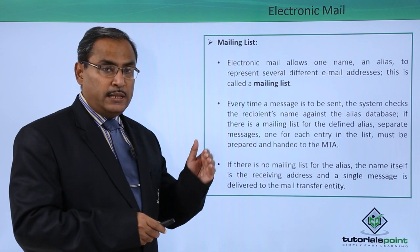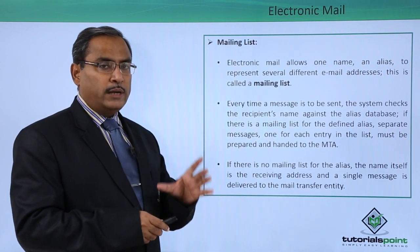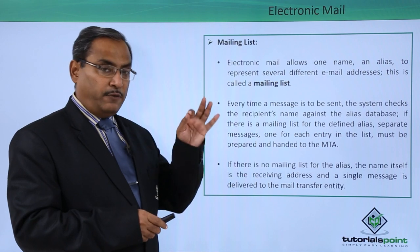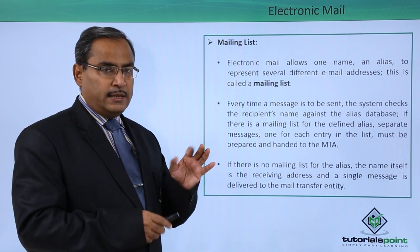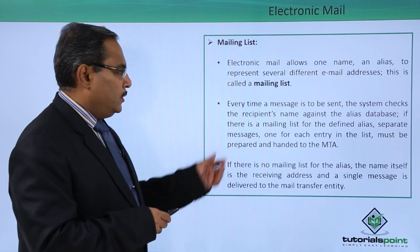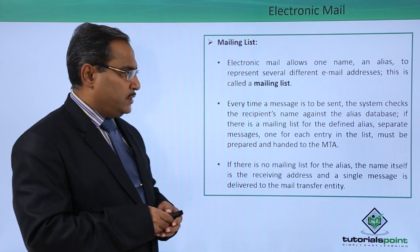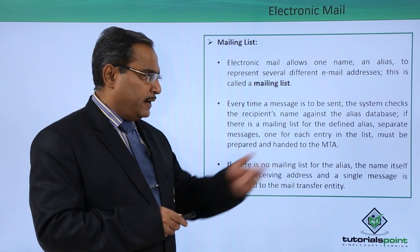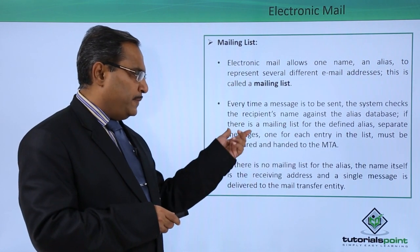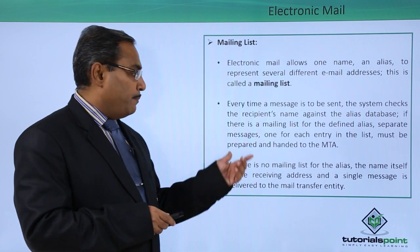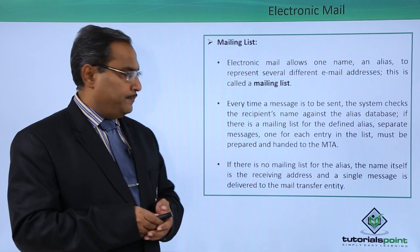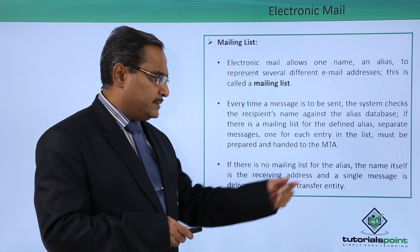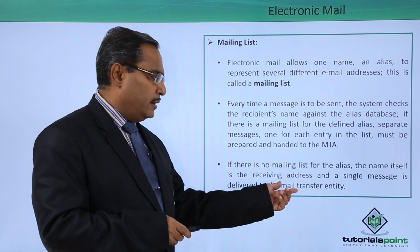When sending one message to all email addresses mentioned in the mailing list, the message is individually composed and sent for each email address. If there is no mailing list for the alias, the name itself is the receiving address and a single message is delivered to the mail transfer entity.